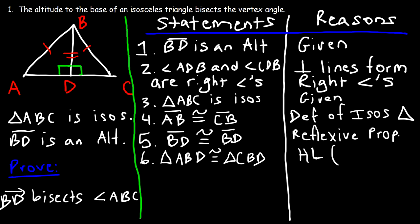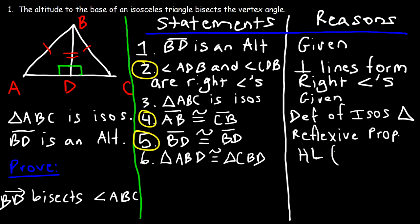We need to write the statements that coincide with the HL postulate. We started with the right angle, which came from statement two. Then we moved to the hypotenuse, which is statement four — AB is congruent to CB — and then the legs are congruent, which is statement five. So it's statements two, four, and five.